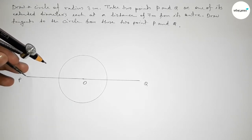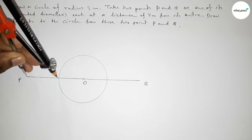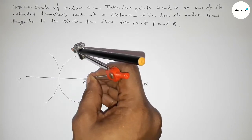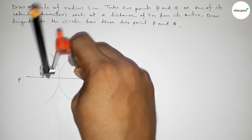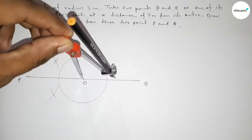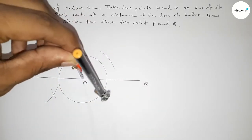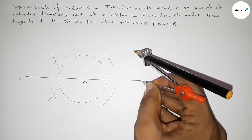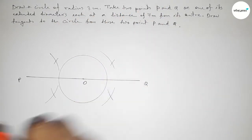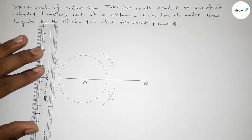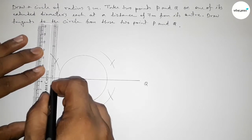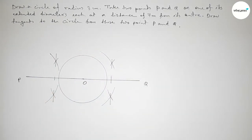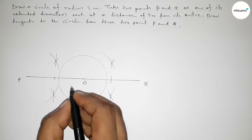Next we have to bisect the distance PO. Taking greater than half of PO and drawing an arc, then with the same length putting the compass to cut arcs on both sides. We then bisect the line OQ similarly, joining the arcs to find the bisector of PO and OQ.